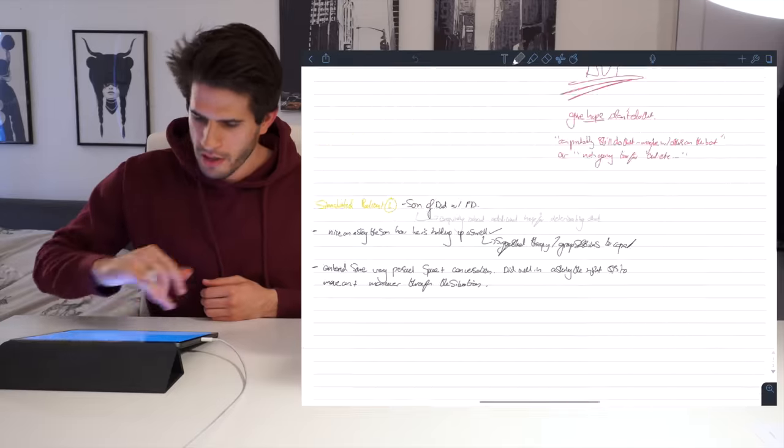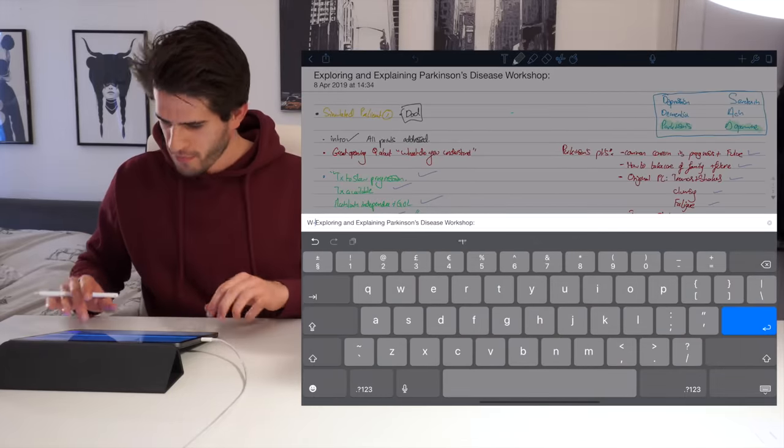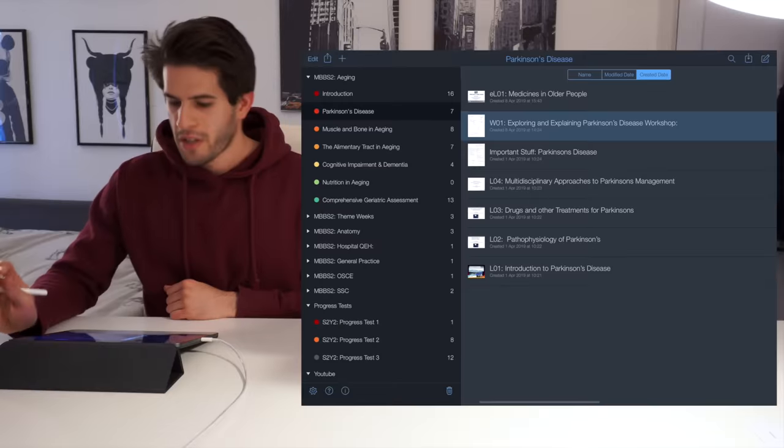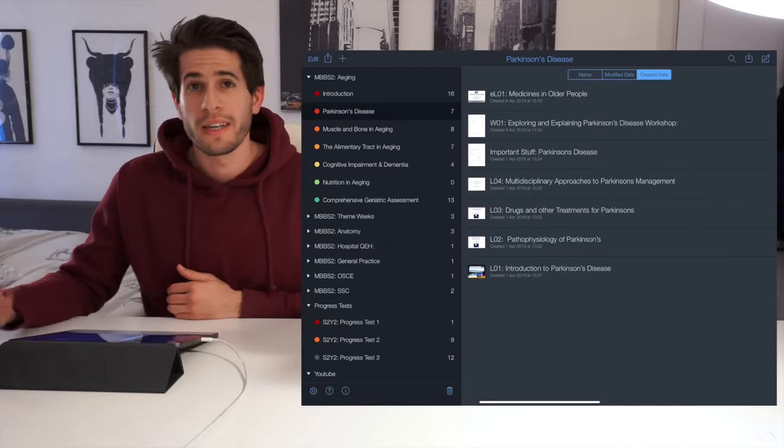This should actually be labeled WO1. I have mislabeled that. Alright, nice. So at a quick glance I can see that I have four lectures here, one workshop and one e-learning module.